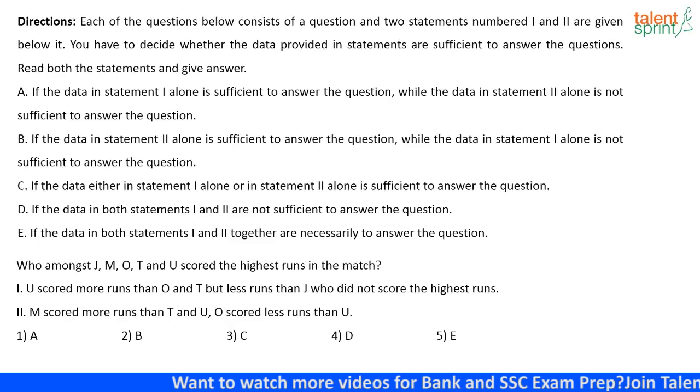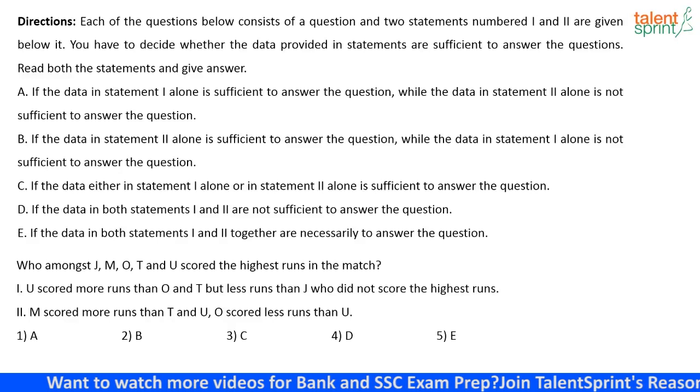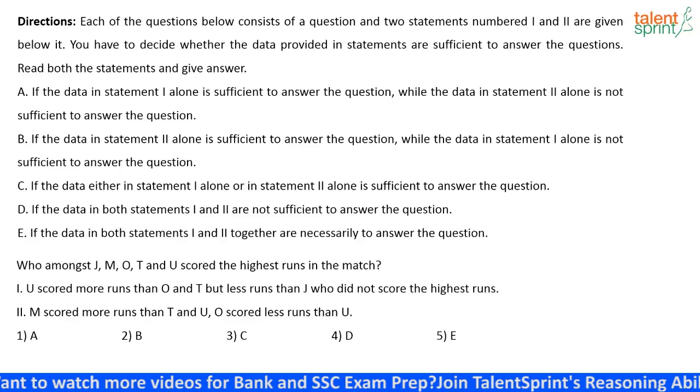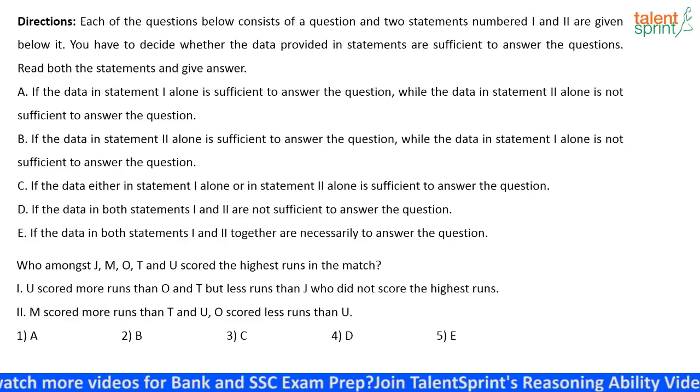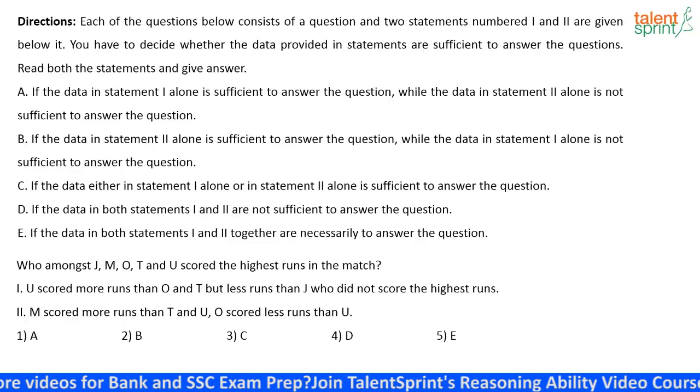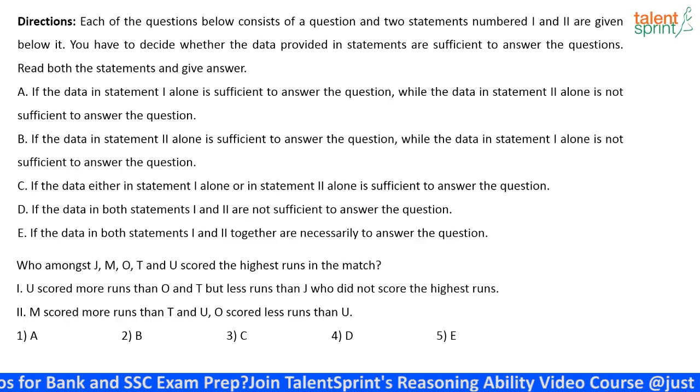Who amongst J, M, O, T and U scored the second highest runs in the match? So, the first statement says, U scored more runs than O and T, but less runs than J, who did not score the highest runs.